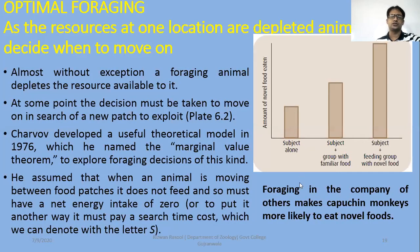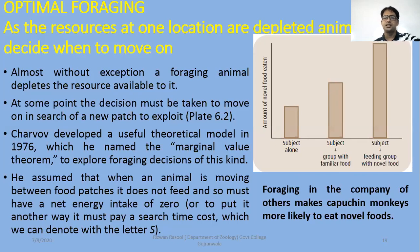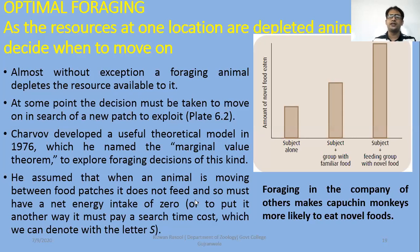The next point is migration or movement with reference to optimal foraging. As resources at one location are depleted, animals have to decide when to move. Almost without exception, a foraging animal depletes the resources available to it. At some point the decision must be taken to move on in search of a new patch to exploit. A scientist developed a useful theoretical model in 1976 named the Marginal Value Theorem to explore foraging decisions of this kind.